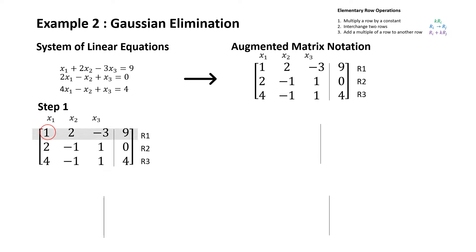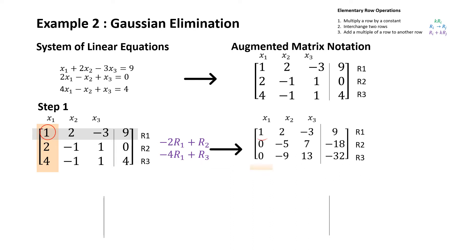First we want to transform the matrix to obtain a 1 in the pivot position. In this example we can see that we already have a 1 in the pivot position. Therefore, we want to transform the matrix to obtain a 0 for every other entry in the column, and we do this by adding a multiple of a row to another row. This operation leads to the matrix on the right, and we can see a sample calculation.